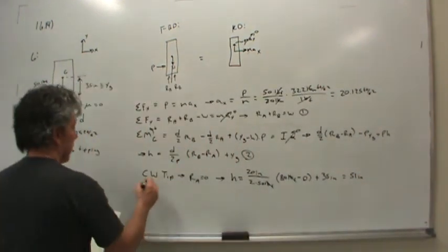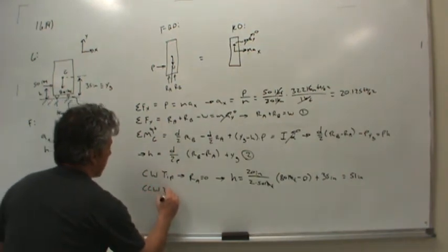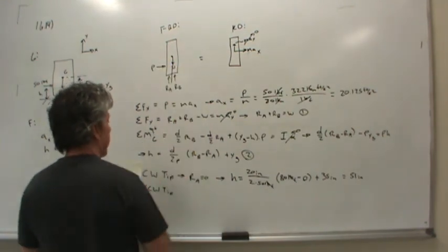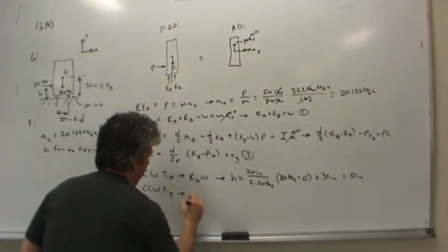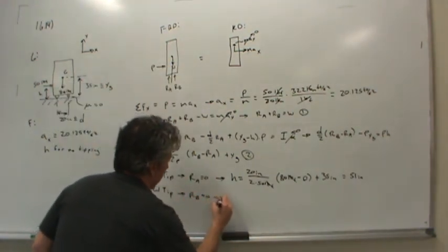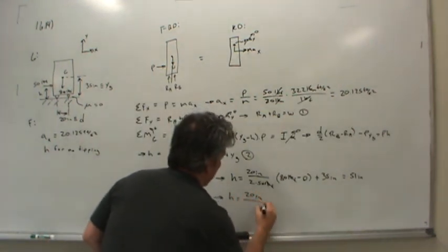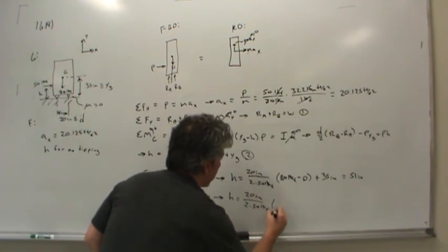Now what about counterclockwise tipping? Well, if it's starting to tip counterclockwise, that means rb has gone to zero. And so h equals, let's see, 20 inches over 2, over 50 pounds of force.